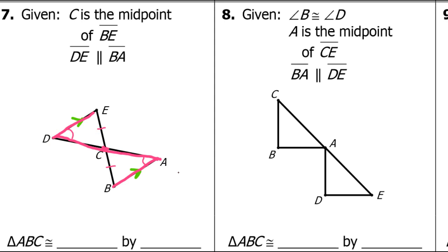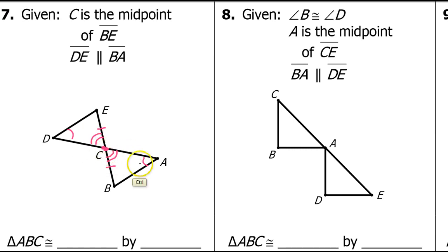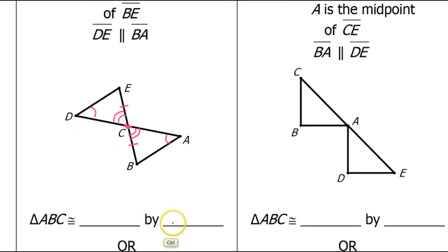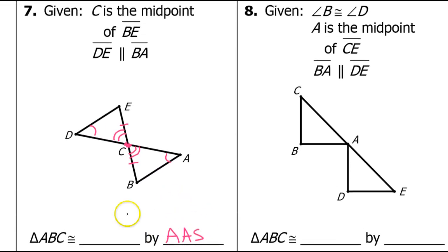So I can mark those. In addition to that, I also have vertical angles, which are also congruent. So that is enough to prove that these two triangles are congruent by angle-angle-side — two angles and the side that's not between them. Triangle ABC is congruent to triangle DEC.